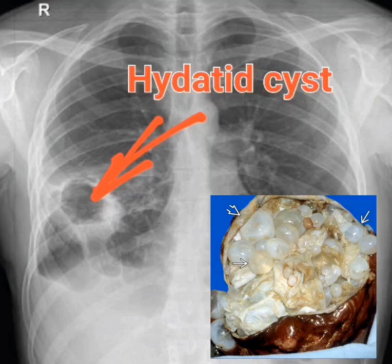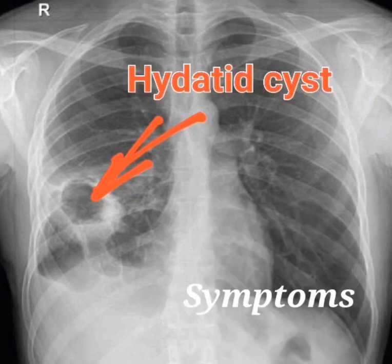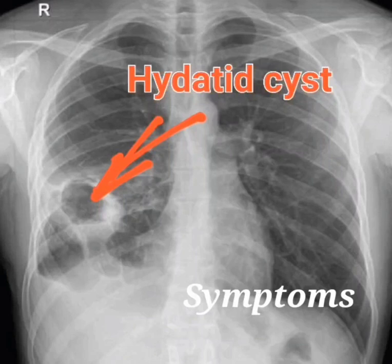The symptoms of a hydatid cyst of the lung can vary depending on the size and location of the cyst. Some people may be asymptomatic, while others may experience symptoms such as chest pain, cough, fever, hemoptysis (coughing up blood), wheezing, shortness of breath, and pleurisy — inflammation of the lining of the lungs.